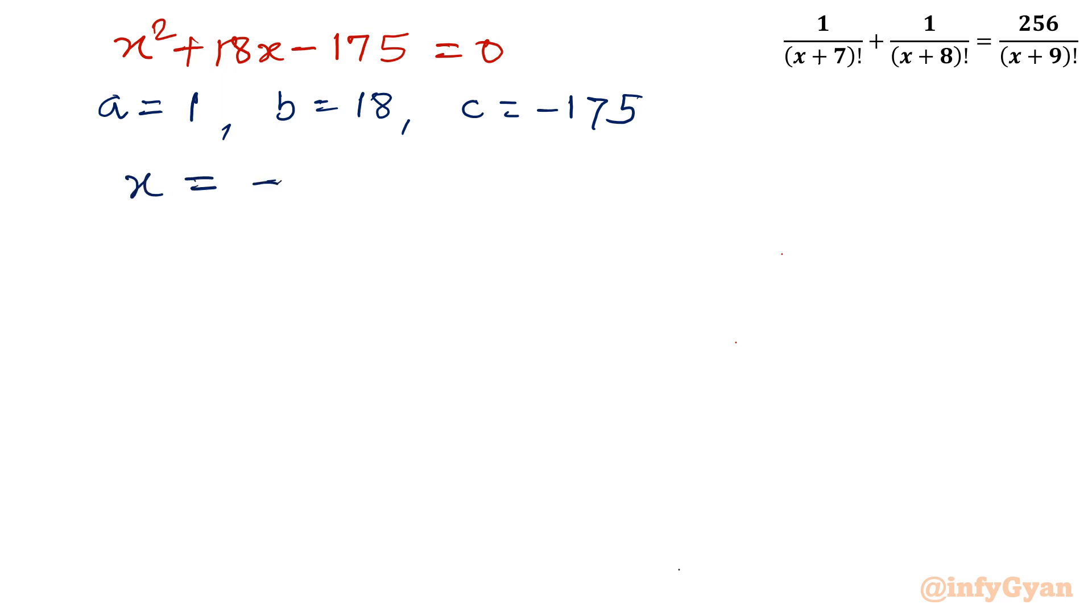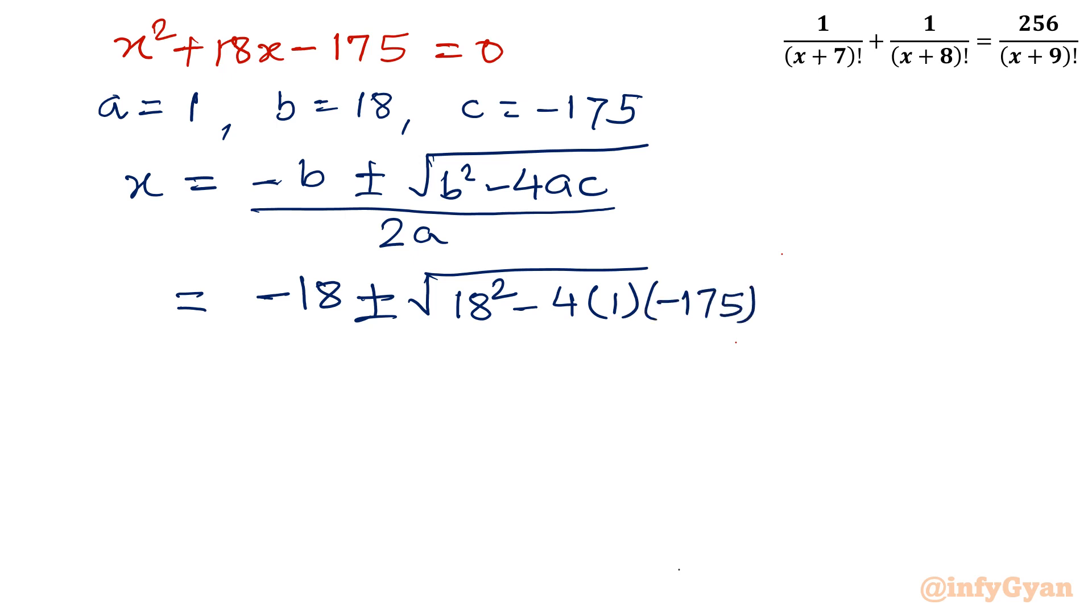x is equal to minus b plus or minus square root b square minus 4ac over 2a. So negative 18 plus minus square root b square minus 4a is 1, c is negative 175 over 2a, so 2 times 1. So negative 18 plus minus, 18 square is 324 minus 4 times 175, so 800 minus 100, so it would be plus 700 over 2.